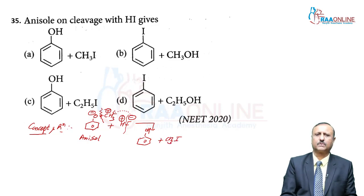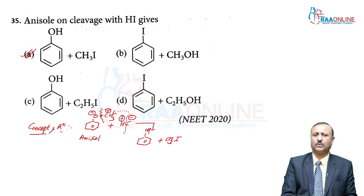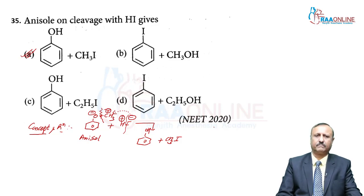The two products are phenol and CH₃I (iodomethane). This product is present in option A, so the answer is A. The bond is broken because the phenoxide ion is more stable — electrons go to the oxygen atom, H⁺ ions attach to oxygen giving phenol, and the CH₃ group combines with I⁻ to give CH₃I. This question is from NEET 2020 — easily solved by studying the alcohol, phenol, and ether chapter.